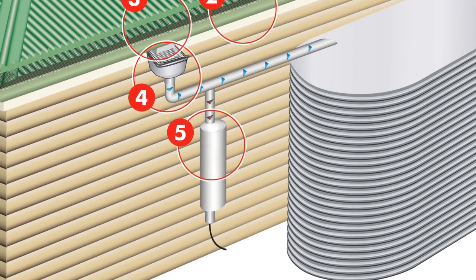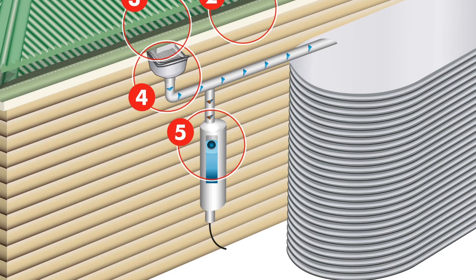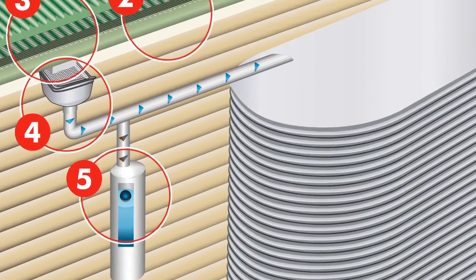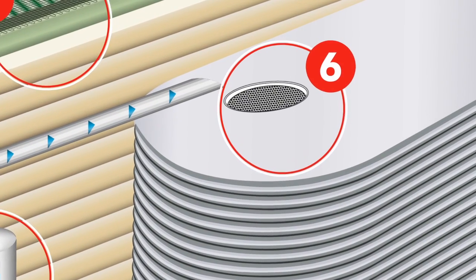Install first flush diverters to help prevent the most contaminated rainwater from entering the tank. Ensure a tank screen is installed at tank entry point to keep mosquitoes and pests out.